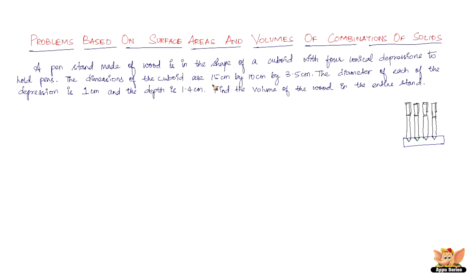The dimensions of the cuboid are 15 cm × 10 cm × 3.5 cm — length, breadth, and height. The diameter of each depression is 1 centimeter, and the depth is 1.4 centimeters — that's the vertical height. So we've got 1 cm diameter and the height of 1.4 centimeters.